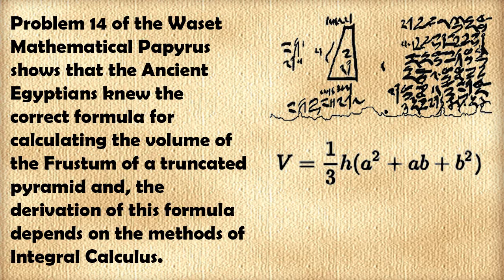Problem 14 of the Waset mathematical papyrus shows that the ancient Egyptians in Africa knew the correct formula for calculating the volume of the frustum of a truncated pyramid. However, the derivation of this formula depends on the methods of integral calculus.